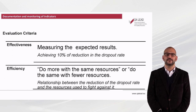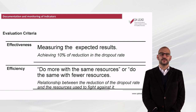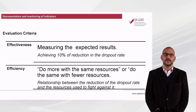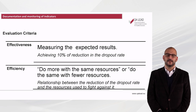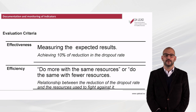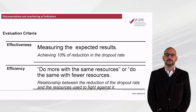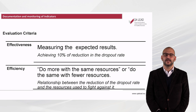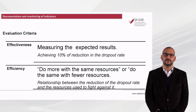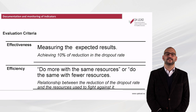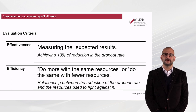In addition to these difficulties, it is necessary to bear in mind the criteria of evaluation that we intend to measure. If we are more focused on results, we will have indicators of effectiveness — those that measure expected results. For example, achieving a 10% reduction in dropout rates. If we are more focused on resources, we should apply efficiency indicators. This type of indicator measures the resources used to achieve the results — that is to say, doing more with the same resources or doing the same with fewer resources. For example, we can think about the relationship between the reduction of the dropout rate and the resources used to control it.